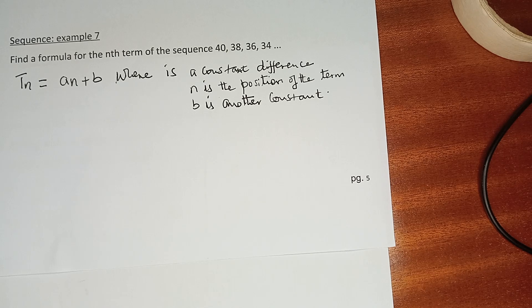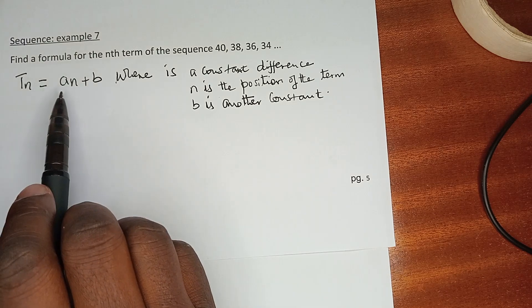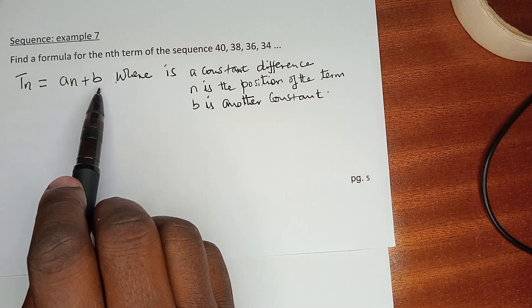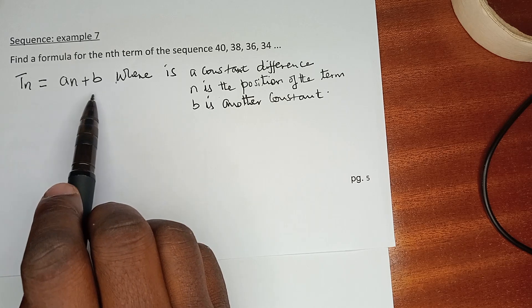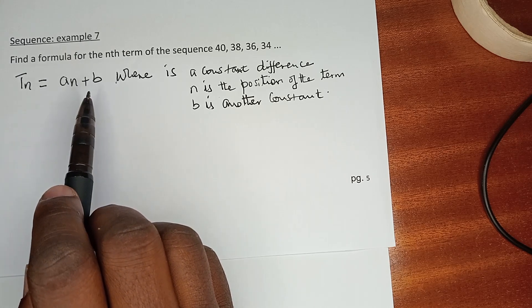have understood that if the first row of difference is constant and equals to a, then the formula for the nth term will be given by the formula a*n + b. Only when the first row is common, please note that then any term that fits in that sequence is given by a*n + b where a is